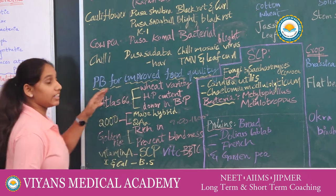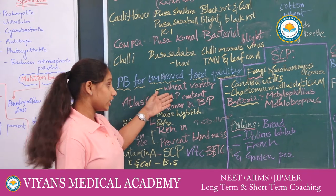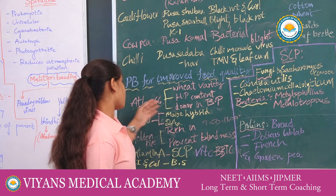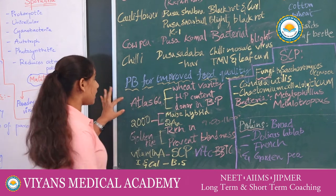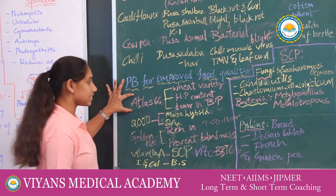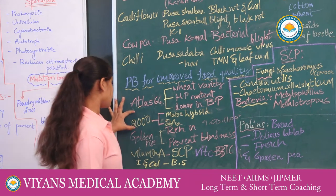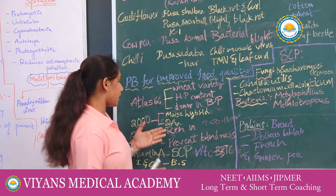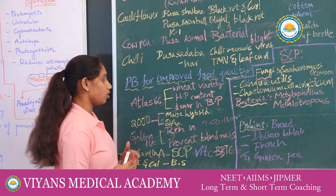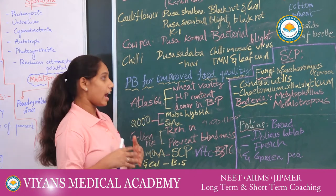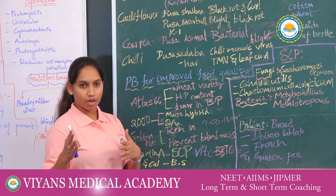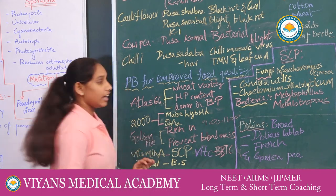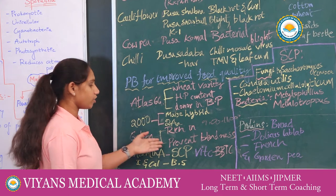Atlas 66 is a wheat variety with high protein content and is used as a donor in plant breeding programs. In the year 2000, maize hybrids were developed with two important amino acids introduced: lysine, which is a basic amino acid, and tryptophan, which is an aromatic amino acid. Golden rice is rich in beta-carotene and helps prevent blindness.